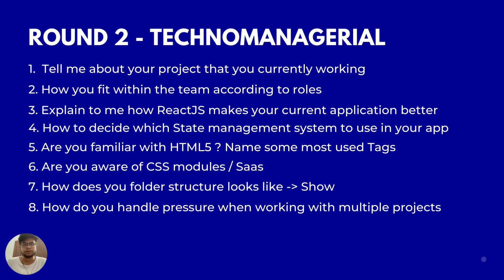Number four was: how do you decide which state management system to use in your app? You can go for Redux, which is global state management — if you're thinking to make your application scale at a larger level, you'd say Redux. Otherwise, you can say you use the Context API, but that is not as scalable as Redux.